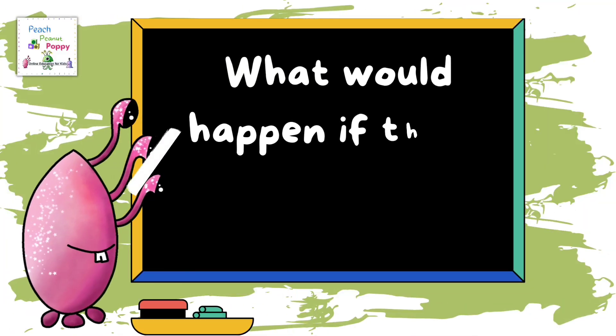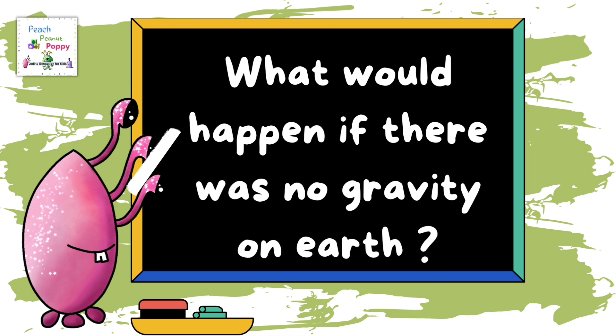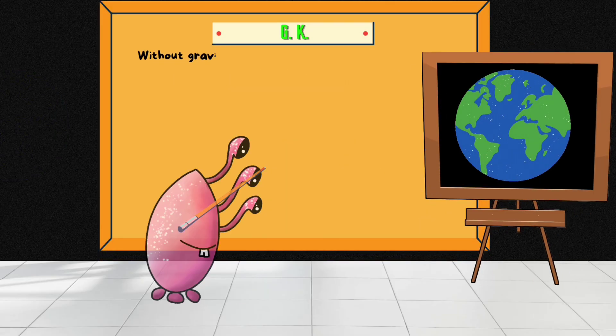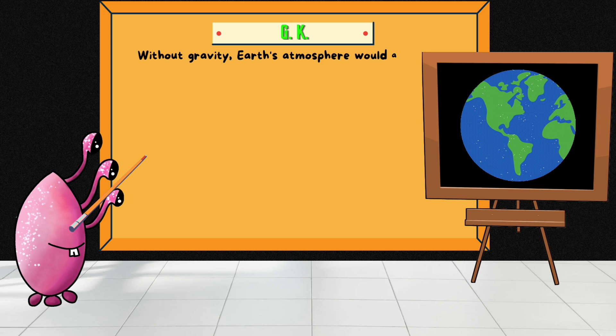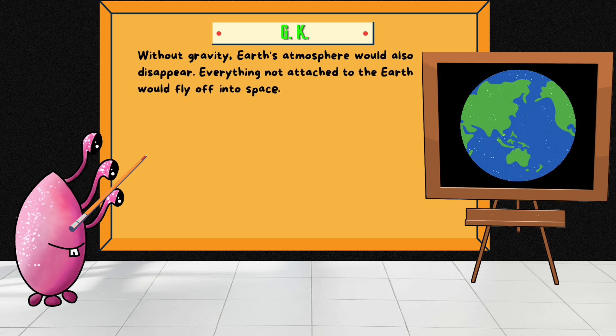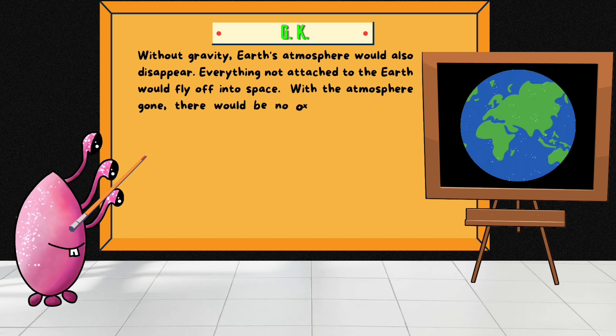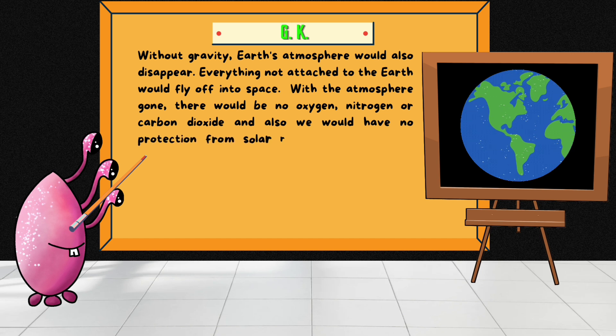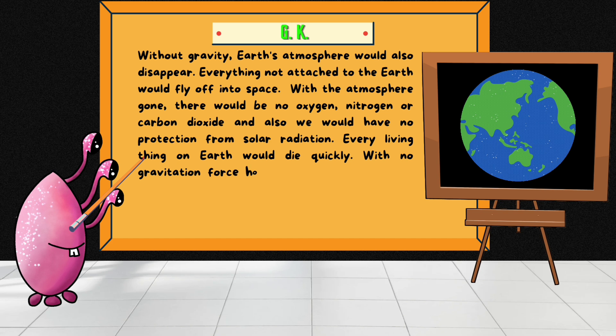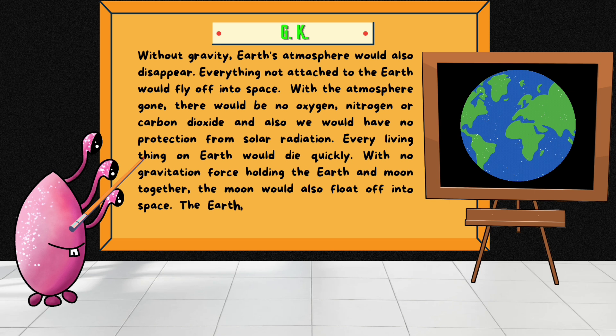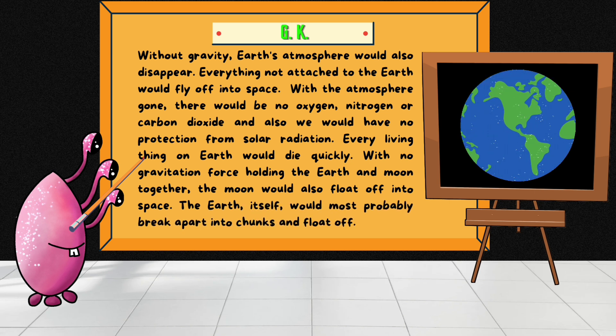What would happen if there was no gravity on Earth? Without gravity, Earth's atmosphere would also disappear. Everything not attached to the Earth would fly off into space. With the atmosphere gone, there would be no oxygen, nitrogen or carbon dioxide and also we would have no protection from solar radiation. Every living thing on Earth would die quickly. With no gravitational force holding the Earth and the moon together, the moon would also float off into space. The Earth itself would most probably break apart into chunks and float off.